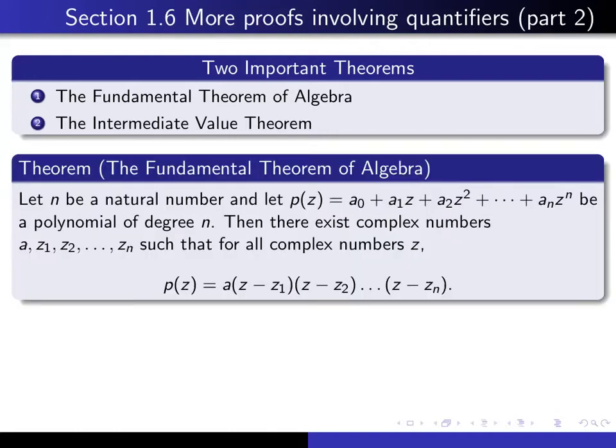Here's the statement of the fundamental theorem of algebra. Let n be a natural number, and let p(z) be a polynomial of degree n. Then there exist complex numbers a and z₁ up to zₙ, so n plus 1 complex numbers, such that for all complex numbers z, p(z) can be factored in this way.